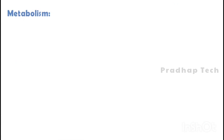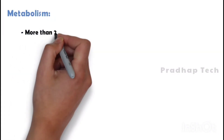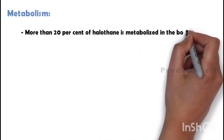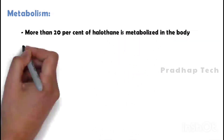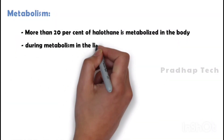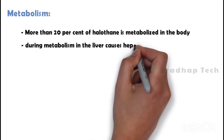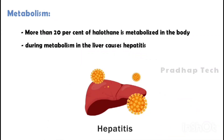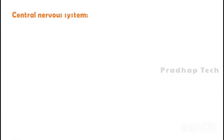Metabolism: more than 20% of halothane is metabolized in the body. Halothane during metabolism in the liver causes hepatitis. When halothane is metabolized into trifluoroacetic acid, it causes autoimmune-mediated halothane hepatitis. So halothane should avoid repeated use — at least three months is mandatory between two exposures.